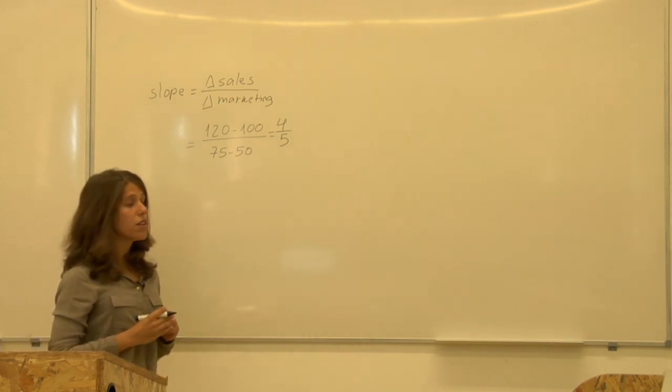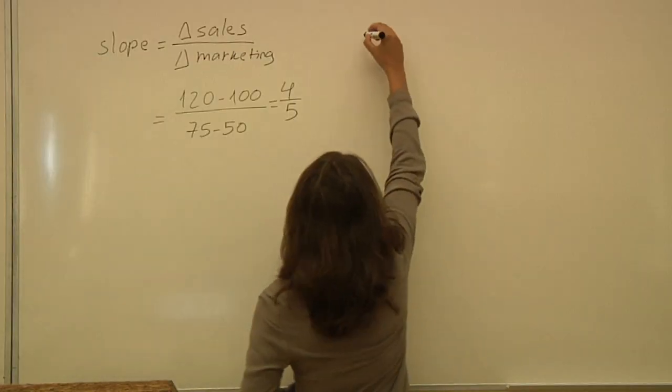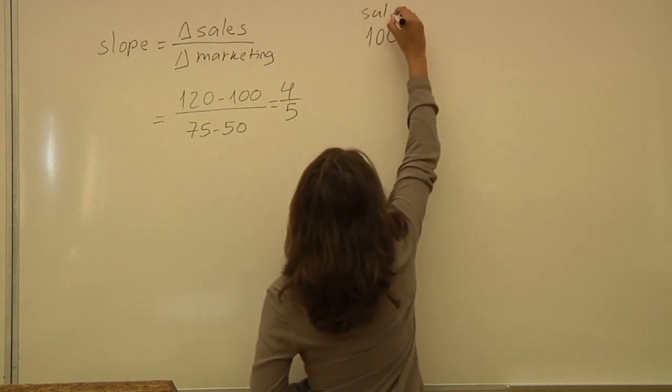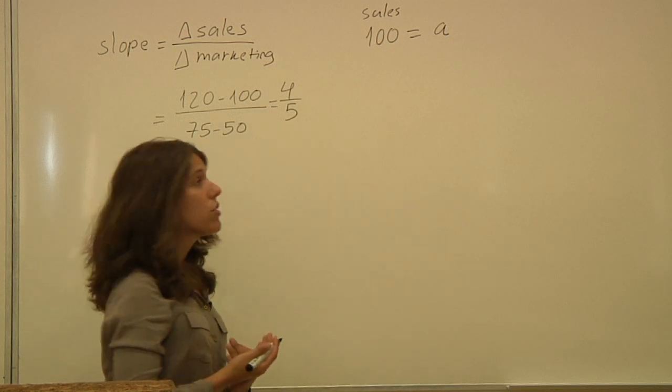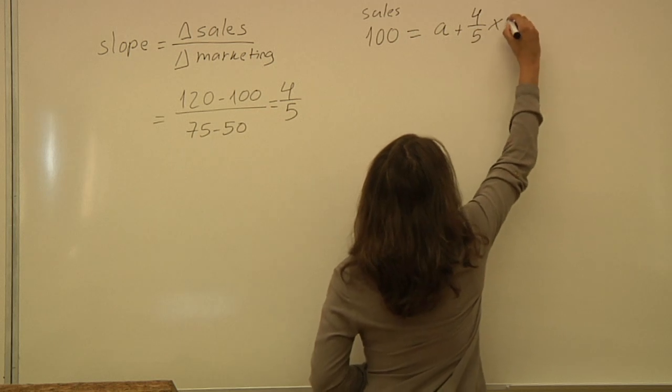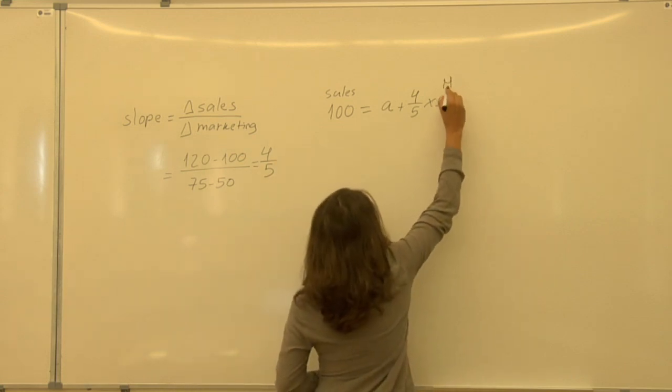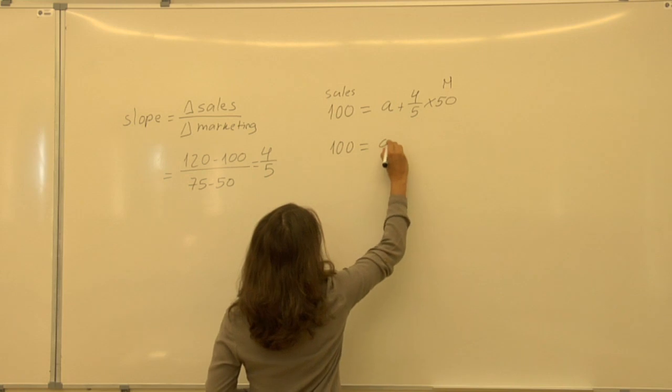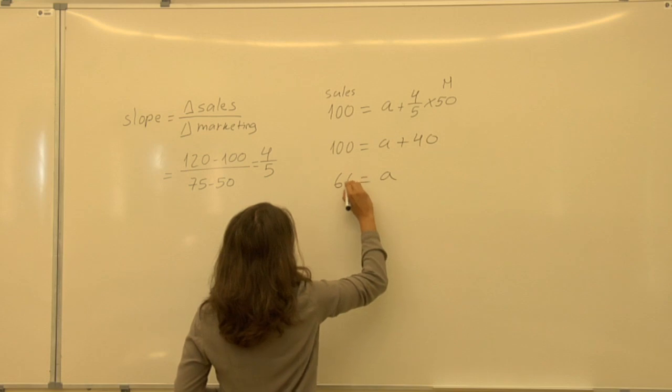And now in order to know the intercept, what we know is that 100 euros in sales correspond to some intercept A that we still don't know plus the slope times the amount we spend in marketing, M. So, 100 equals A plus 40, so A equals 60.